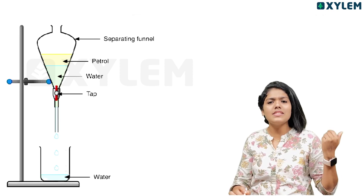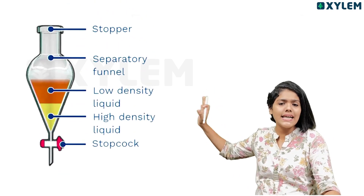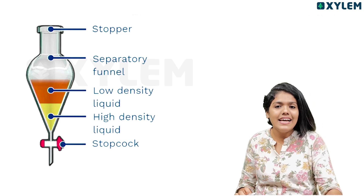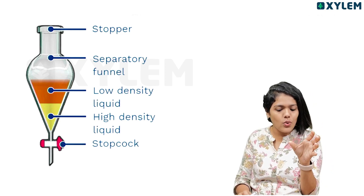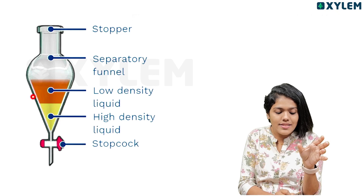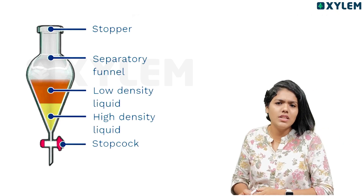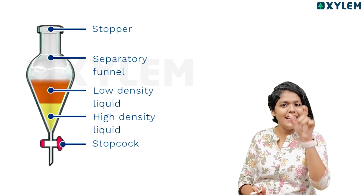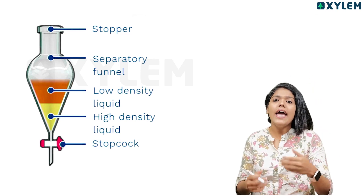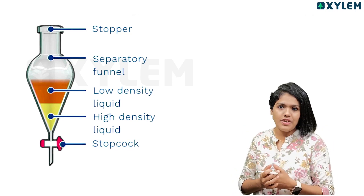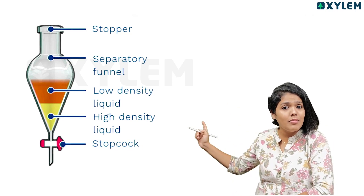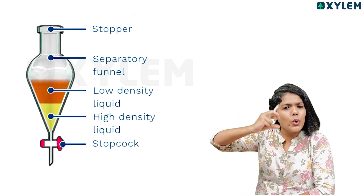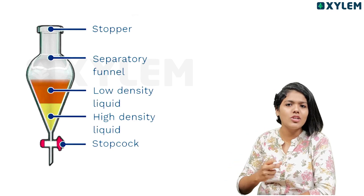The liquids are separated based on their density. The high density liquid settles down and the low density liquid stays at the top. You can even add 3–4 immiscible liquids to get multiple layers according to their density differences. By using the tap — called the stopcock — each layer is easy to separate.